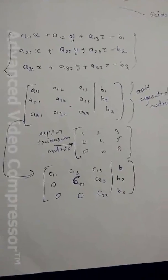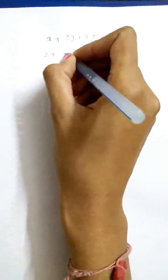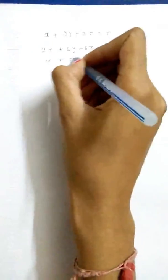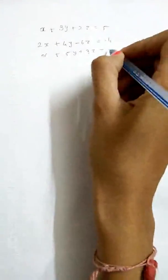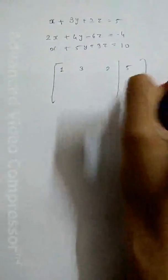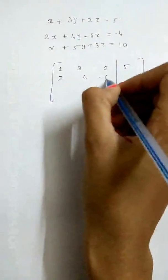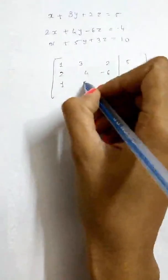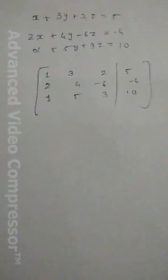Now let's take an example to get a better idea. The system of equations is: x + 3y + 2z = 5, 2x + 4y − 6z = −4, and x + 5y + 3z = 10. We create the augmented matrix of all coefficients: [1, 3, 2 | 5 / 2, 4, −6 | −4 / 1, 5, 3 | 10].